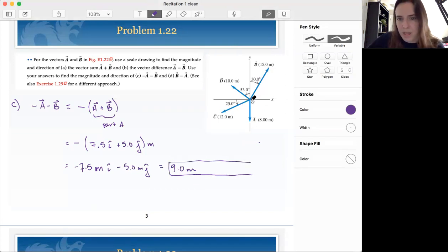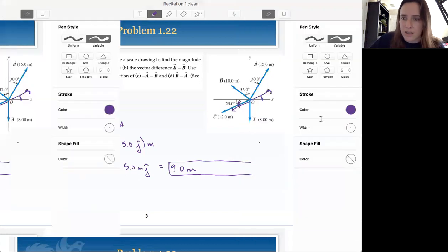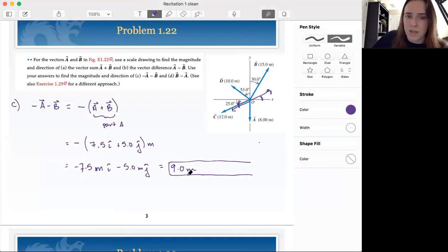But now instead of being at this angle from the positive x-axis, it's going to be at the same angle from the negative x-axis. So if we are at an angle of 34 degrees above the x-axis, we are now at 34 degrees below negative x-axis.